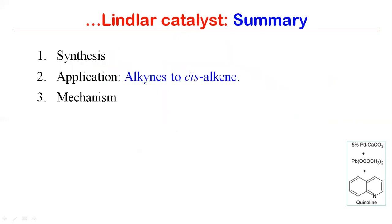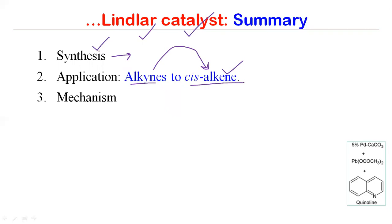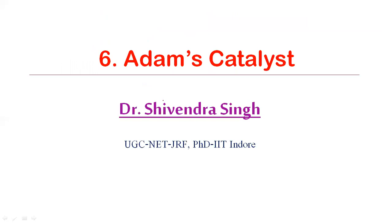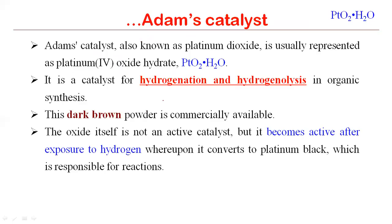In summary for Lindlar's catalyst: it contains five percent palladium on calcium carbonate with catalytic poisons — most commonly lead acetate, and also quinoline or sulfur compounds. The most important application is converting alkyne to cis-alkene, making it a very useful stereoselective synthetic transformation giving cis-alkene as the major product. The mechanism follows heterogeneous catalysis.